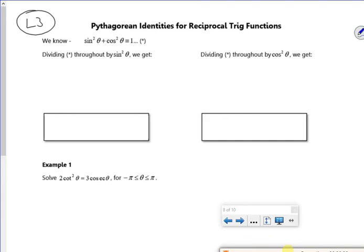So we can make new equations using sine squared plus cos squared is 1. It says divide through by sine squared. So I've got sine squared theta divided by sine squared theta plus cos squared theta divided by sine squared theta is 1 divided by sine squared theta.